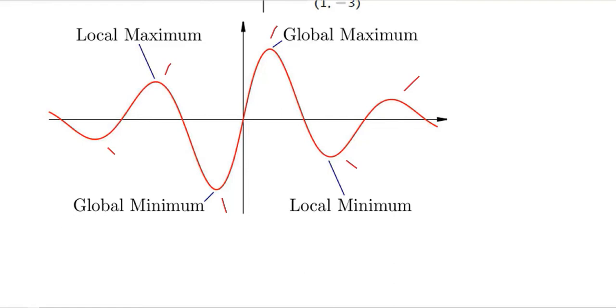For example, this point is the highest possible maximum as compared to this one as well as that one. So it is the global maximum that we are talking about. It is called the global maximum, whereas the other maximum points they are known as the local maximum.